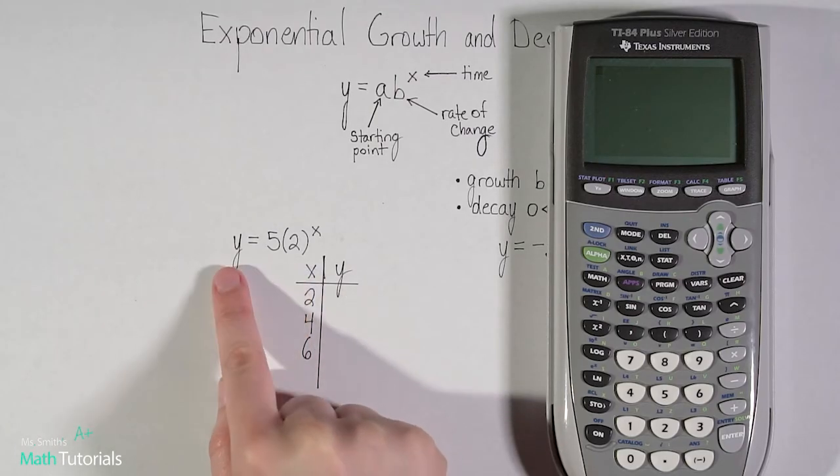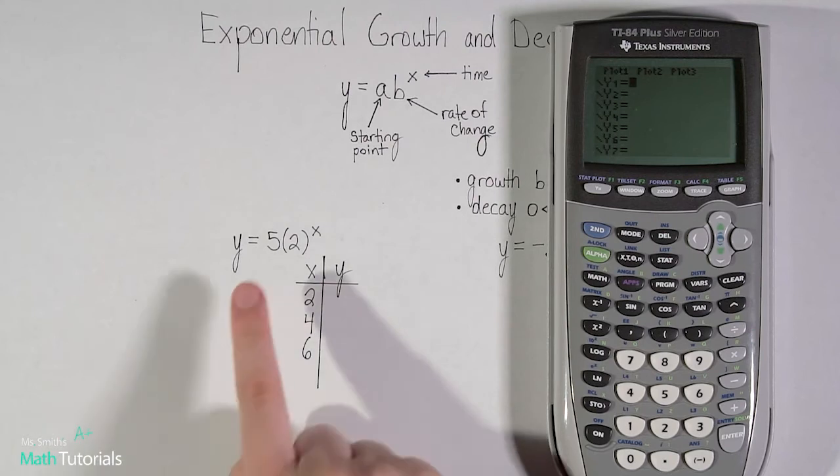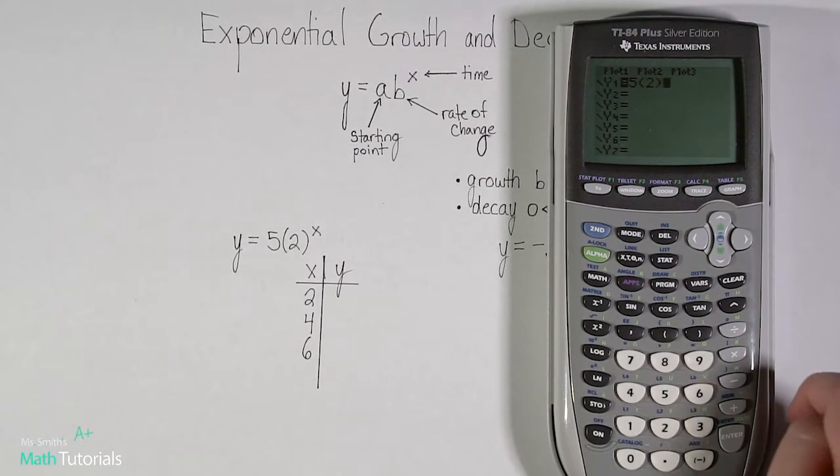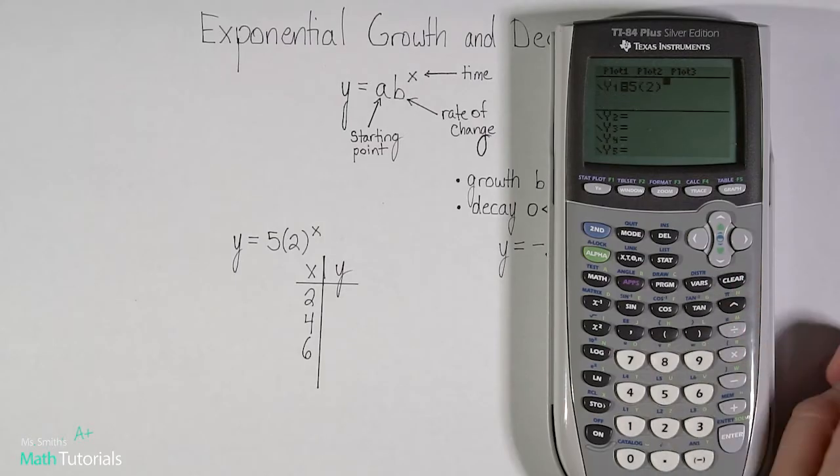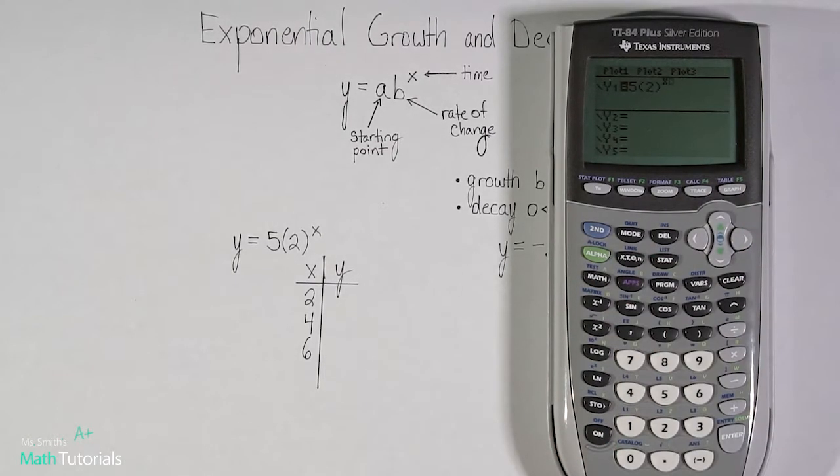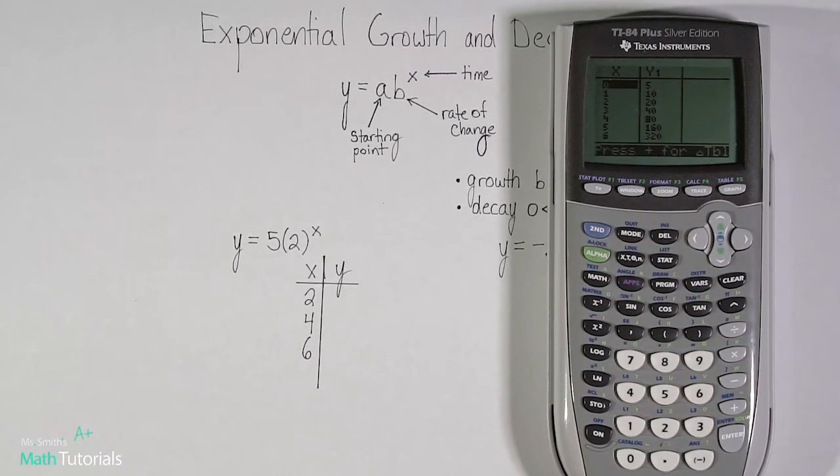I've got my y equals, so my y is alone, so I'm going to go to my y equals function, and I'm going to type this in. So 5 times 2 to the power of, so you use that little caret, x. And then you're going to hit second graph. That's going to pull up your table.